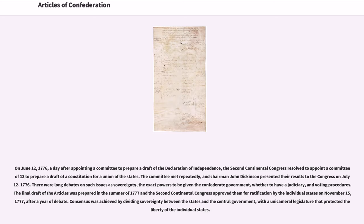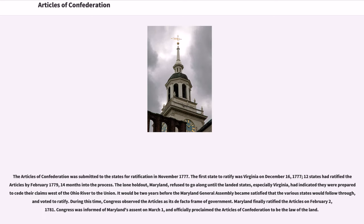Consensus was achieved by dividing sovereignty between the states and the central government, with a unicameral legislature that protected the liberty of the individual states. The Articles of Confederation were submitted to the states for ratification in November 1777. The first state to ratify was Virginia on December 16, 1777. Twelve states had ratified the Articles by February 1779. The lone holdout, Maryland, refused to go along until the landed states, especially Virginia, had indicated they were prepared to cede their claims west of the Ohio River to the Union.